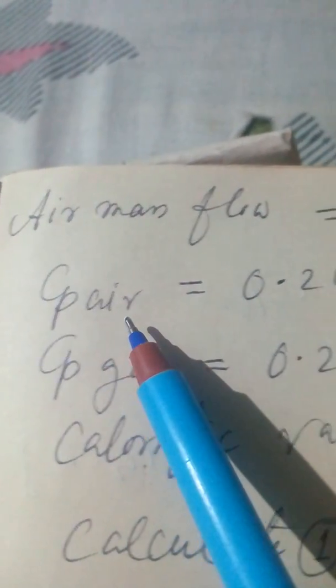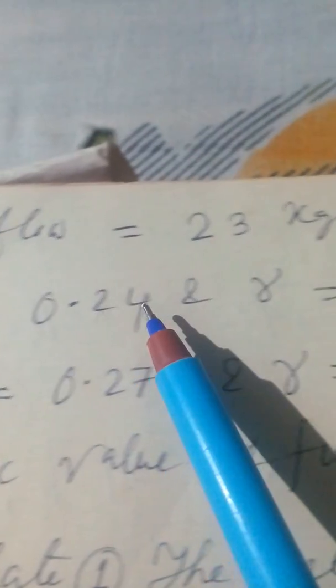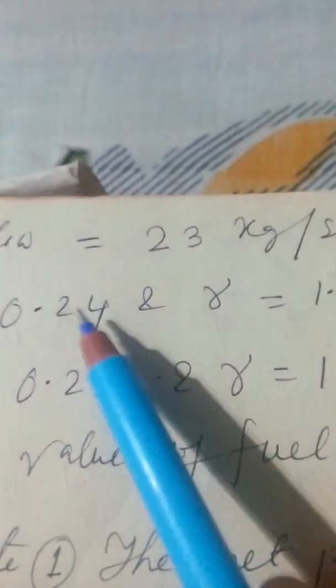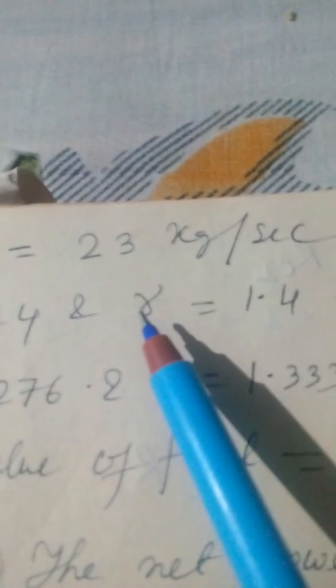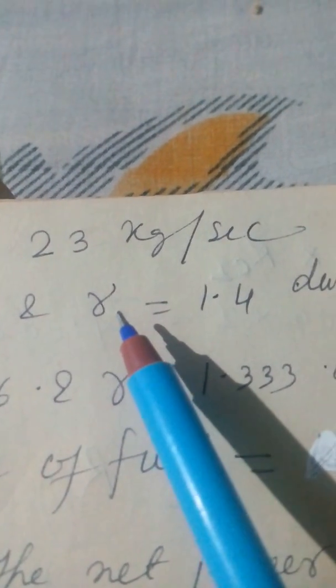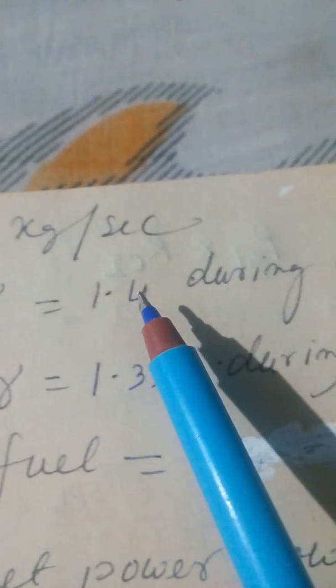CP of air is equal to 0.24, it is in kilocalorie per Kelvin. Gamma is equal to 1.4 during compression.